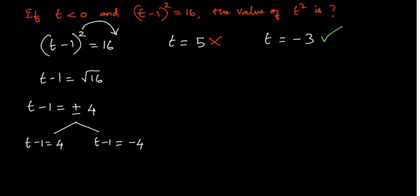Now we got the value of t, that is, t = -3. From this value, we have to get the value of t². So if I take the square on both sides, t² = (-3)². Finally, t² = 9. Thank you.